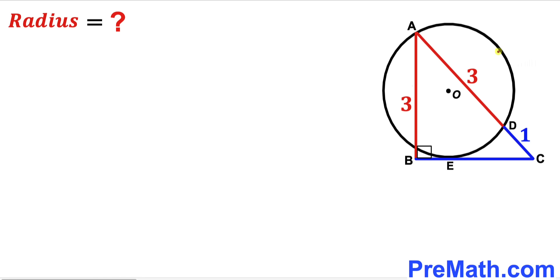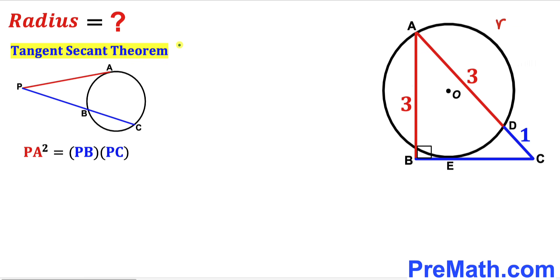Let's focus on this circle. I'm going to label the radius of this circle as lowercase r, and now we are going to find the value of radius r. Let's recall the tangent-secant theorem.